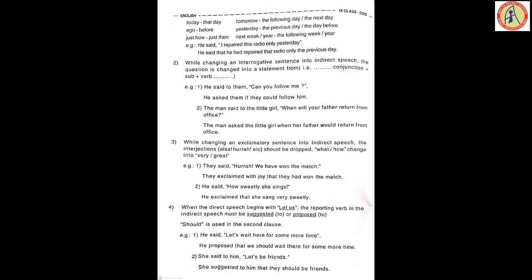'He said, How sweetly she sings!' becomes 'He exclaimed that she sang very sweetly.' 'How' changes to 'very'. When the direct speech begins with 'let us', the reporting verb in indirect speech must be 'suggested' or 'proposed', and 'should' is used in the second clause. Example: 'He said, Let us wait here for some more time.' Answer: 'He proposed that we should wait there for some more time.' Similarly: 'She said to him, Let us be friends.' → 'She suggested to him that they should be friends.'